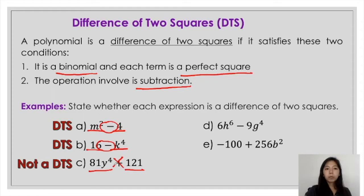For the fourth example, it consists of two terms, so that's a binomial. For the first term, we have 6h raised to 6. Looking at the first term, h raised to 6 is a perfect square, but looking at the numerical coefficient, which is 6, it is not a perfect square. So since it doesn't satisfy the first condition already, this makes it not a difference of two squares.